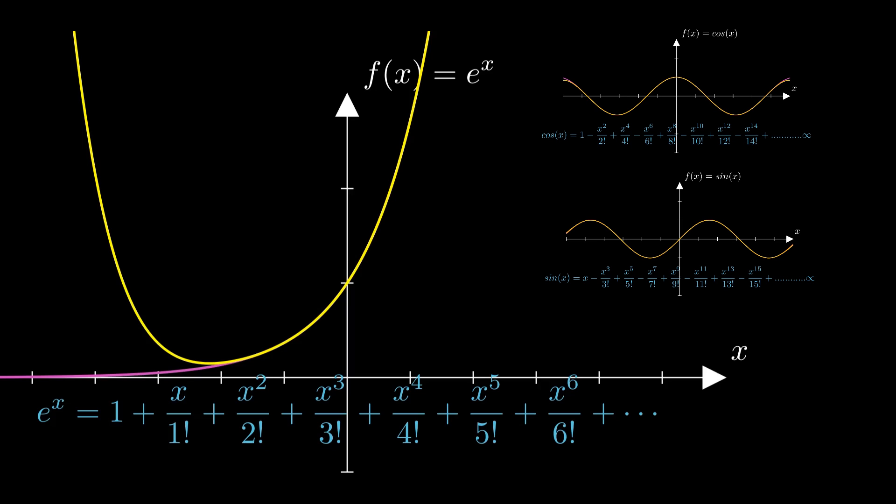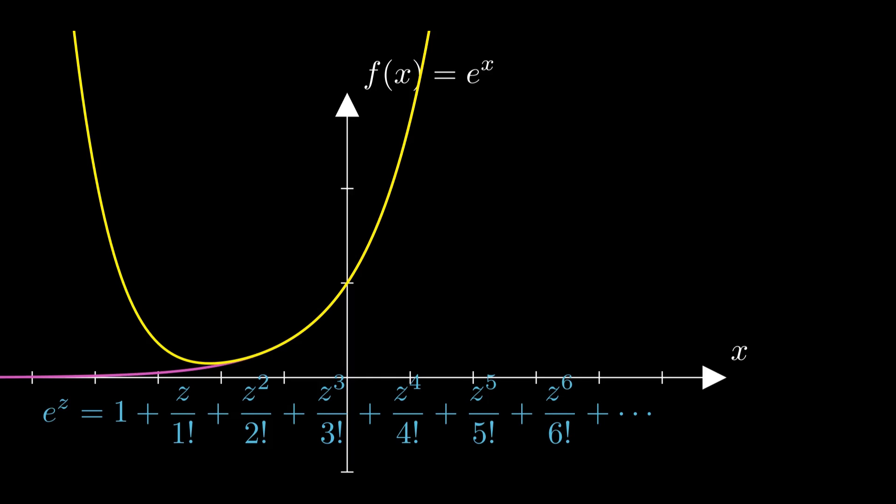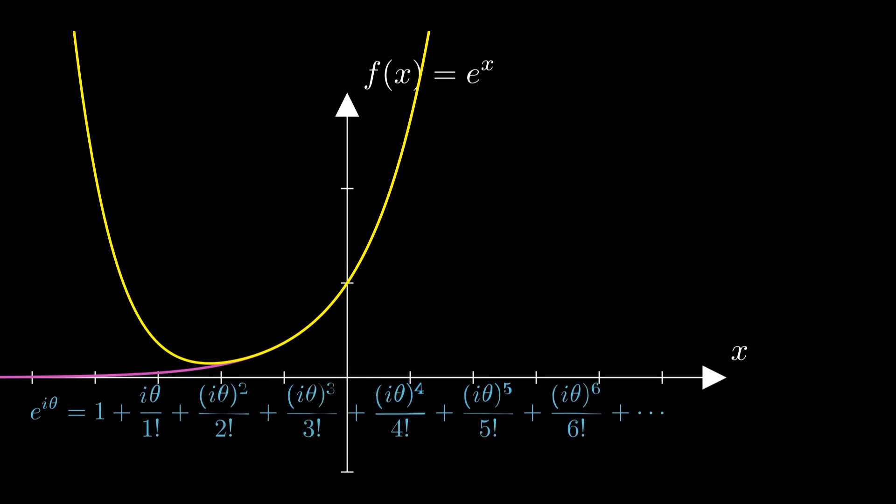Here is where it gets really interesting. It turns out these infinite series expansions work not just for regular numbers but complex numbers too. So, let's replace x with ix in the expansion, where i is our imaginary friend, the square root of negative 1.